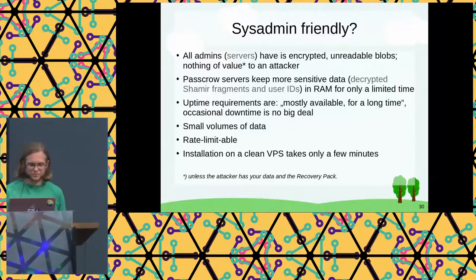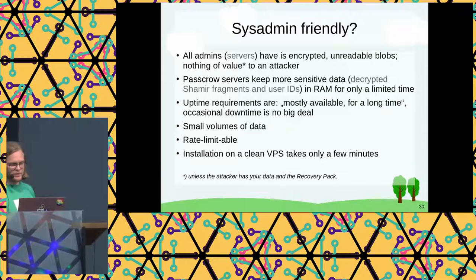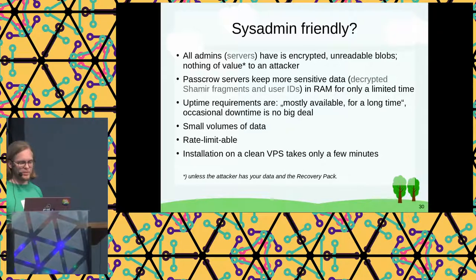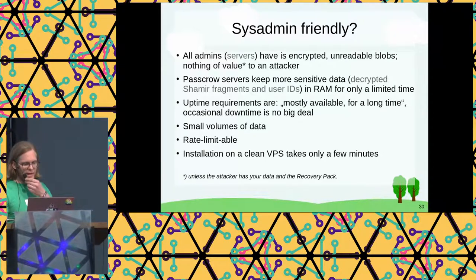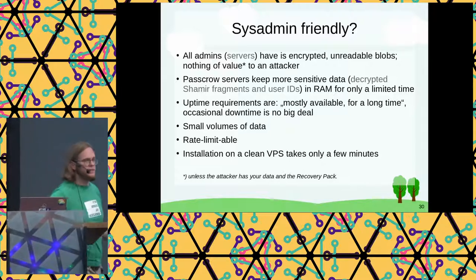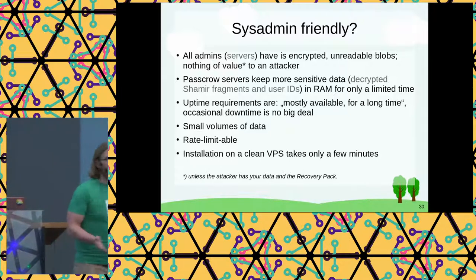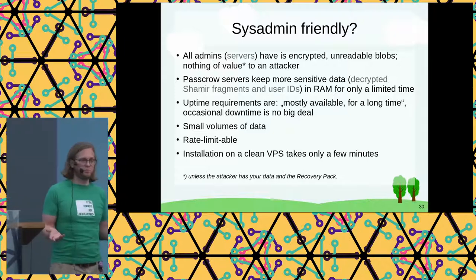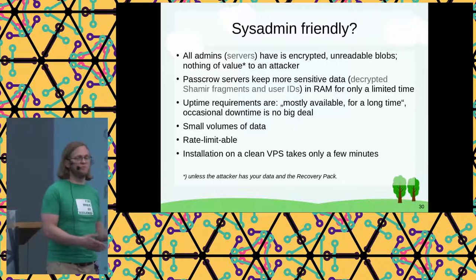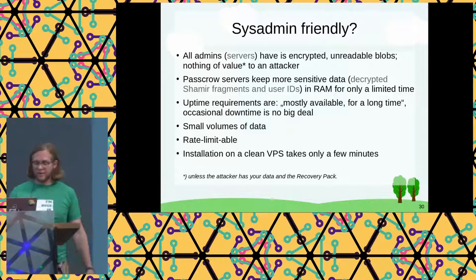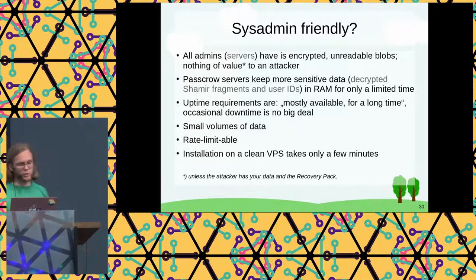Uptime isn't a major concern. You can do things like rate limiting — because PassCrow isn't something you're using constantly, you can have really strict rate limits: five requests per minute. That will suffice to recover, but will make it very hard for people to put any load on the server.